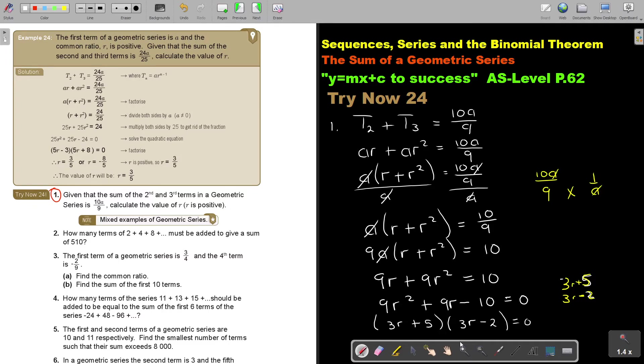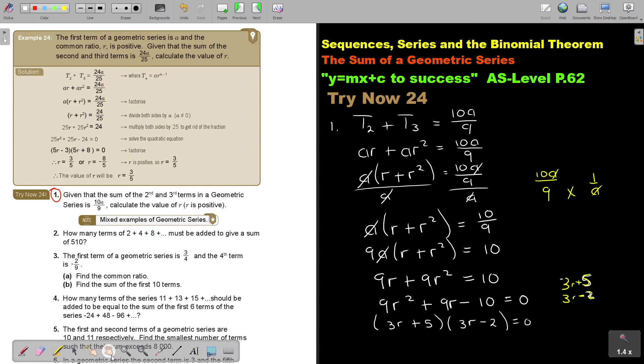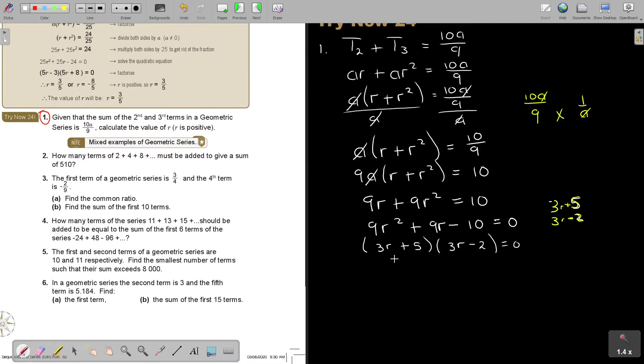So it will be 3R plus 5 and 3R minus 2. I just have to move this. And I have to move up. So therefore, put this equals 0, put this equals 0. So this will be R, it's negative 5 over 3, or R, I take it over, so it's 2.